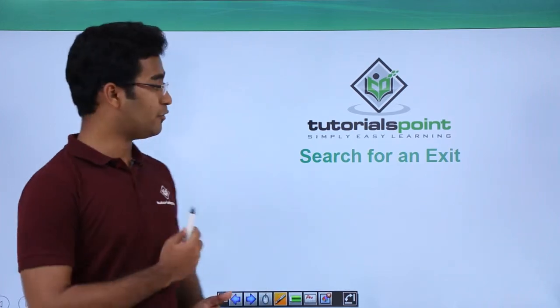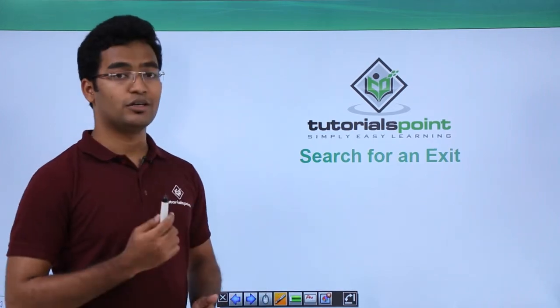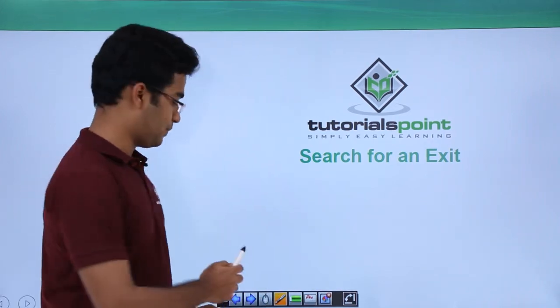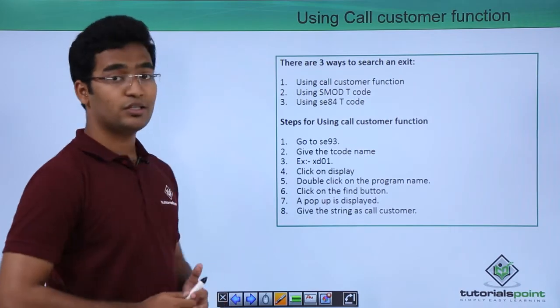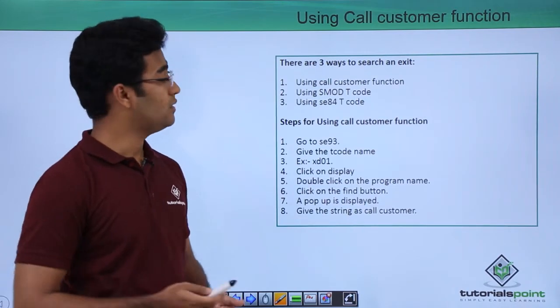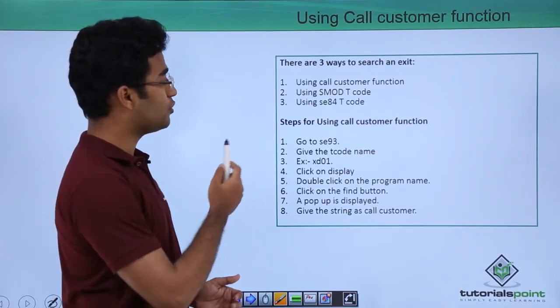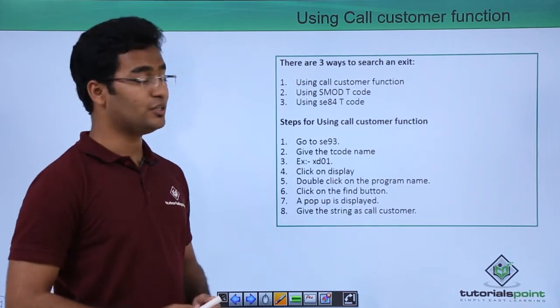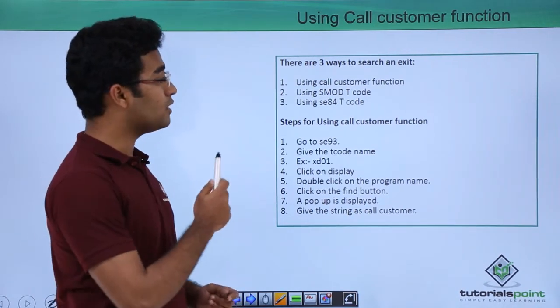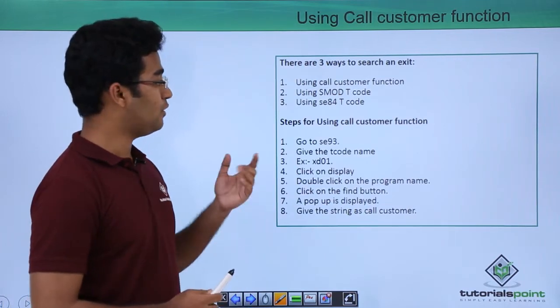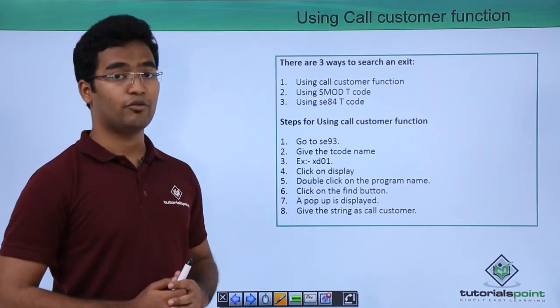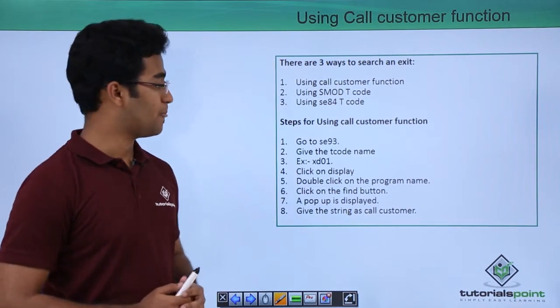In this video, let us see the different ways to search and exit. There are 3 ways to search and exit: using Call Customer Function, then using SMOD transaction code, and using SE84 transaction code.